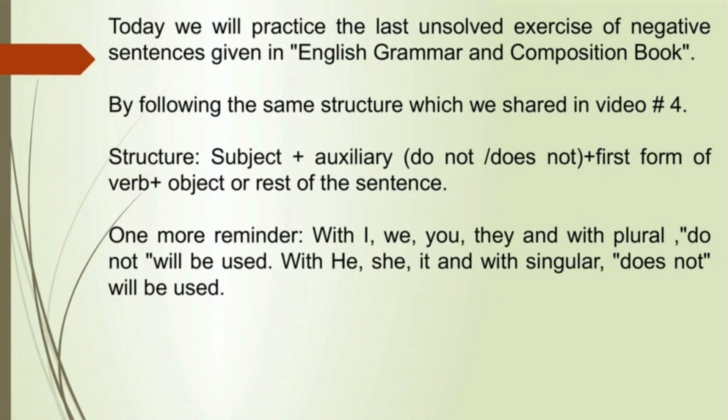Subject plus auxiliary — and which auxiliary are we going to use? Do not, does not. First form of verb plus object or rest of the sentence. My friends, one more reminder: with I, we, you, they, and with plural, 'do not' will be used. And with he, she, it, and singular, 'does not' will be used.